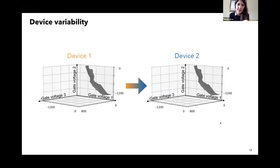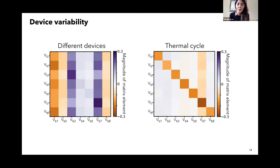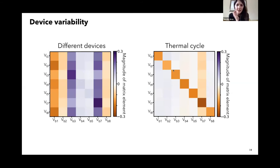You can see here the real epo-surface of our device and how it compares with the real epo-surface of a different device — restricted to three dimensions just for illustration. Here I can show you the matrices that map one epo-surface into the other for different devices and for a single device in a thermal cycle. The device variability between devices was quite large in our case, but for the thermal cycle of a single device, the epo-surface just suffers scaling. This really gives us qualitative and quantitative insights into the variability of devices.